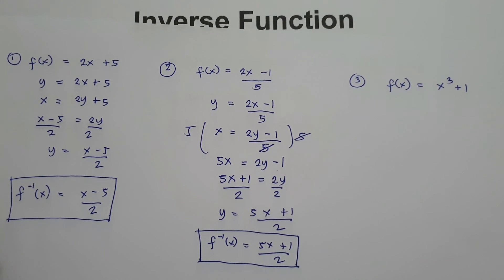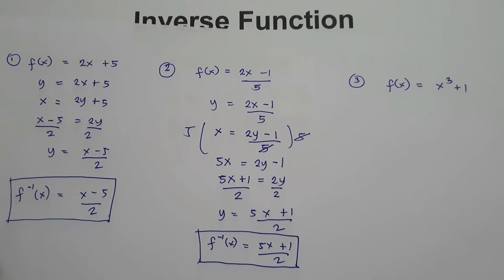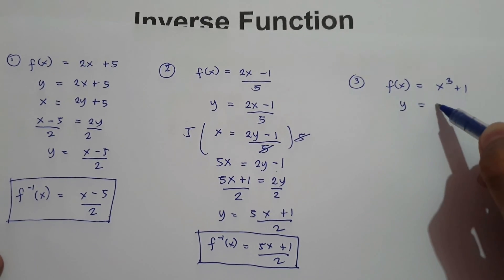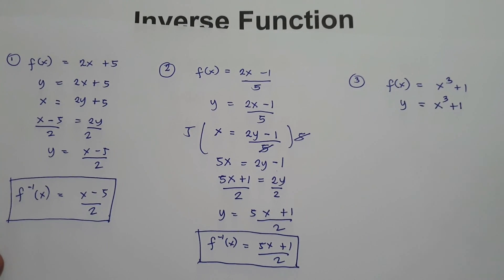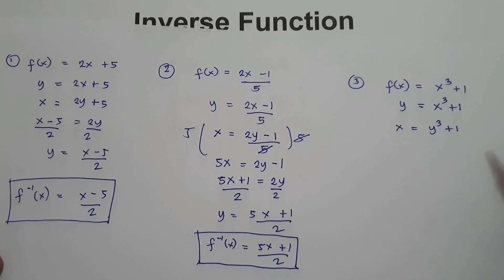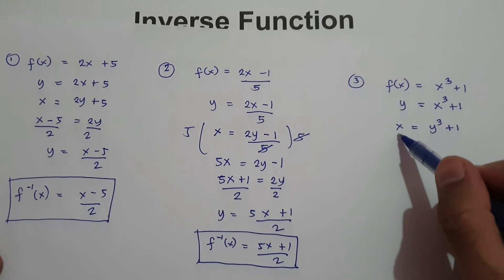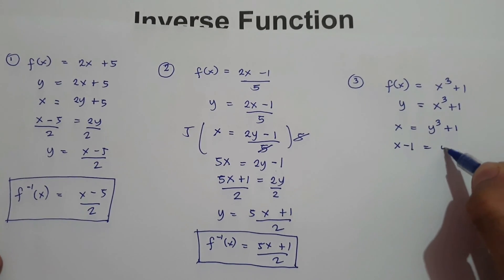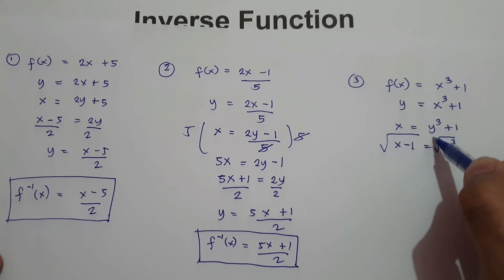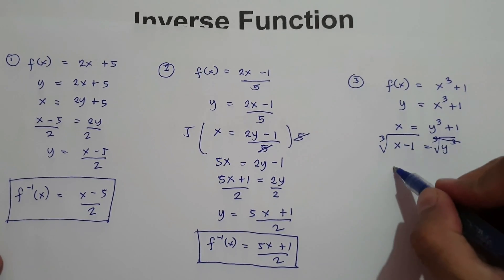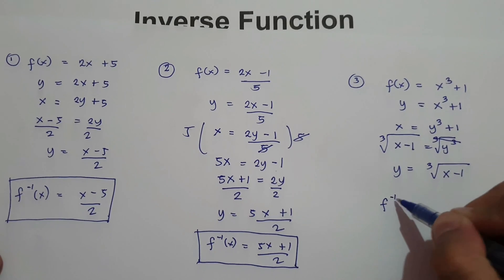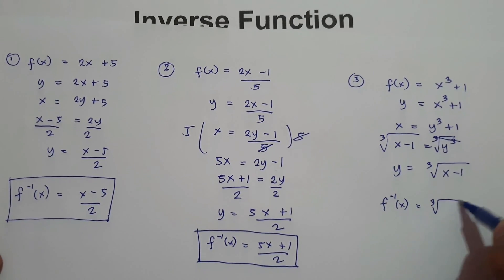What about number 3? Go ahead and find the inverse of this function. First step, change f of x in terms of y. We have y equals x cubed plus 1. Then switch x and y: x equals y cubed plus 1. Move positive 1 to the side of x: x minus 1 equals y cubed. To eliminate the exponent, we cube both sides of the equation, so we have y equals the cube root of x minus 1.